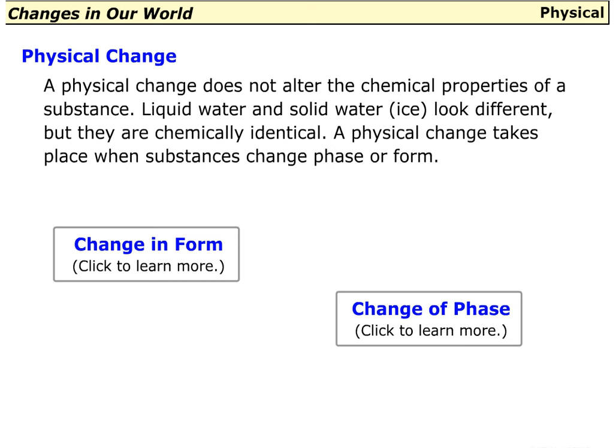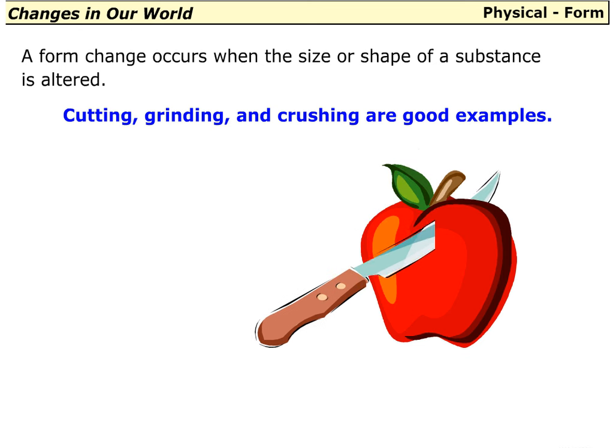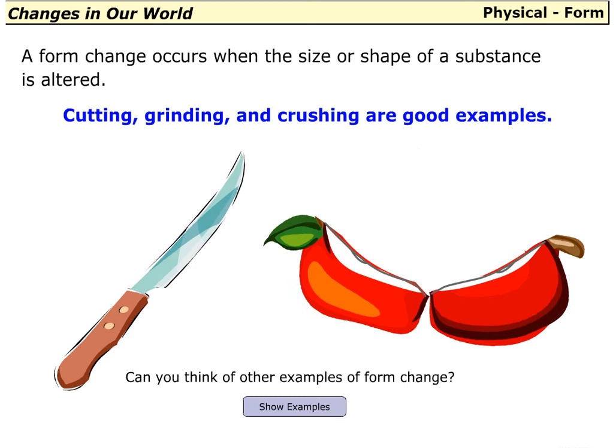A physical change does not alter the chemical properties of a substance. Liquid water and solid water look different, but they are chemically identical. A physical change takes place when substances change phase or form.